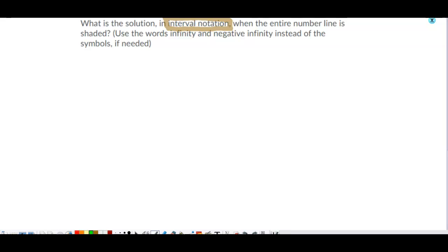Interval notation, remember, is when we do double parentheses if there's no equal to or when there's an infinity. Double brackets if they are both equal to. Sometimes you can have a number not included or a number included, and then the other endpoint has a number not included or the other way around.